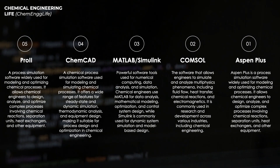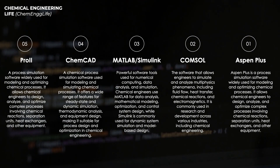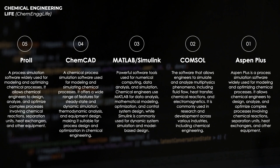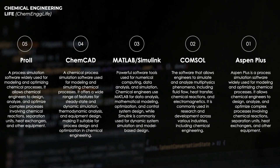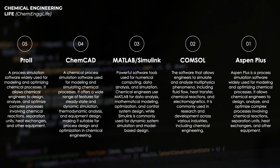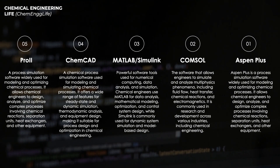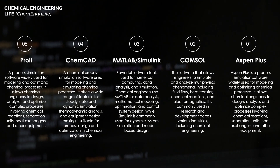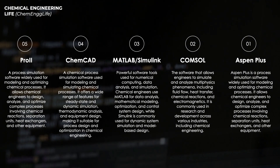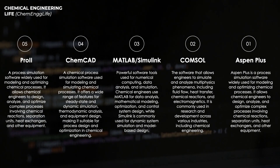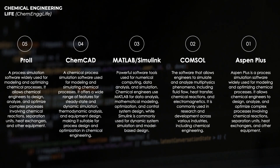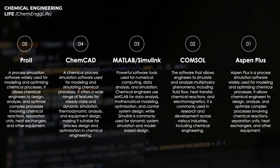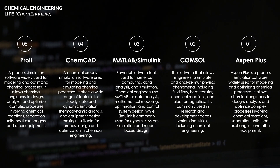The software that we have at the top is Aspen Plus. Aspen Plus is a leading process simulation software used by chemical engineers to model and optimize chemical operations. It offers a comprehensive suite of tools for simulating various unit operations, including distillation, reaction kinetics, heat exchangers, flash tanks, and much more.